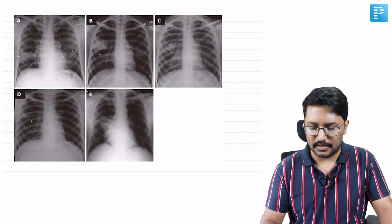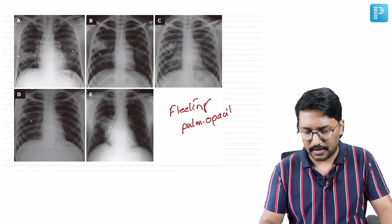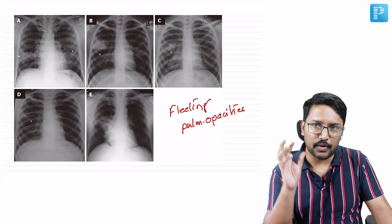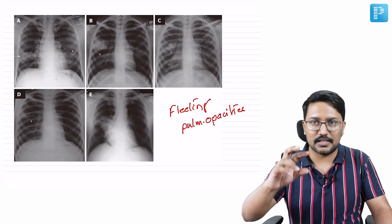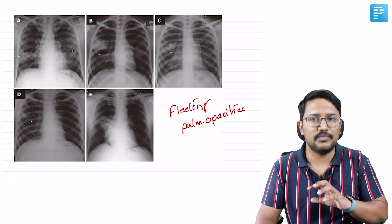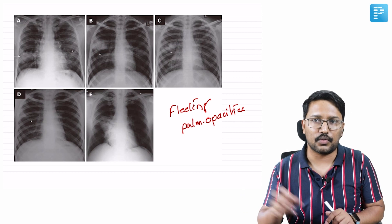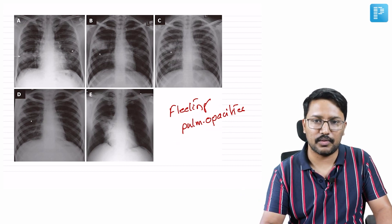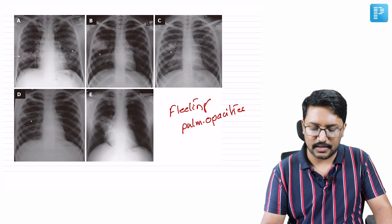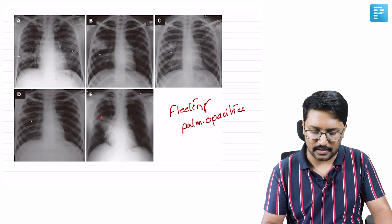The second finding is fleeting pulmonary opacities. On serial X-rays, infiltrates appear in one part of the lung and during subsequent follow-up, these infiltrates change location. This is because the infiltrates are due to deposition of thick viscid mucus. When local clearance mechanisms clear the mucus from one location and it deposits elsewhere, infiltrates appear in the new location — explaining why we see these fleeting pulmonary opacities.